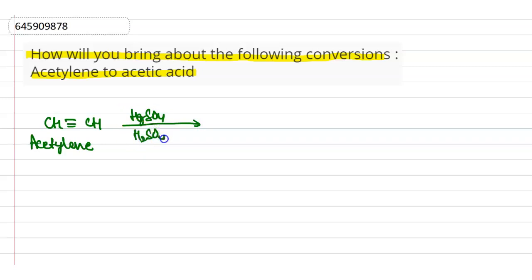Here enol formation occurs. Then whenever enol formation happens, tautomerism will occur.